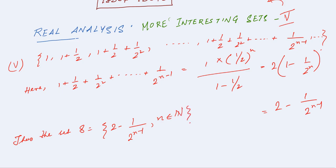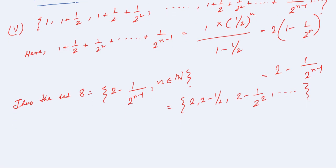This equals {2 - ½, 2 - ¼, ...} and so on and so forth. So basically, we can say that S = {x : 1 ≤ x < 2}.